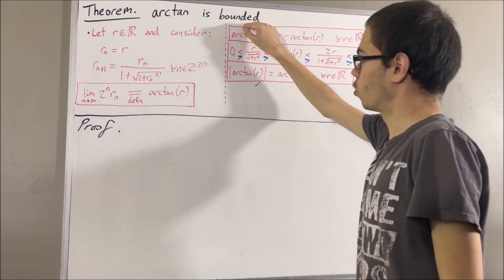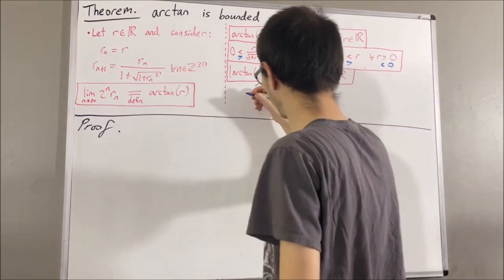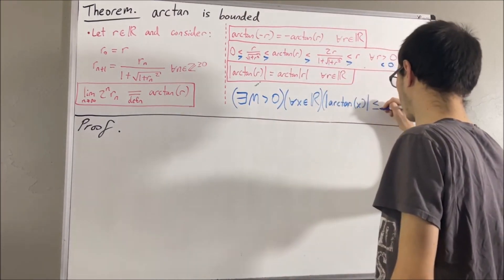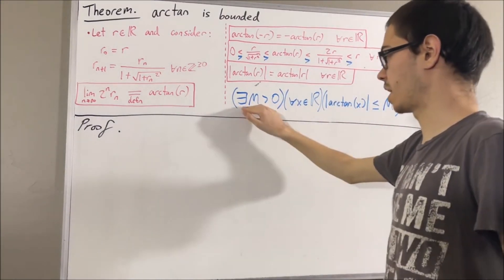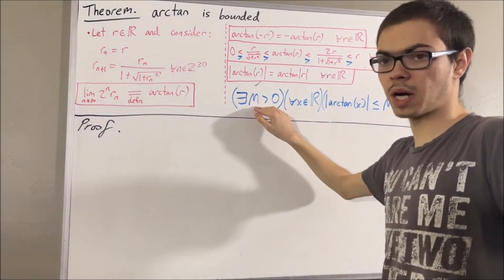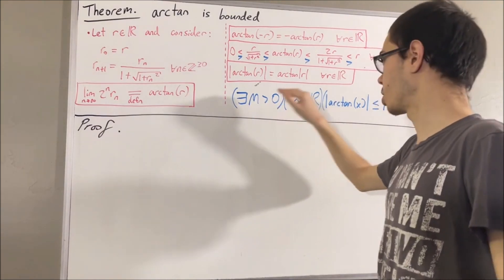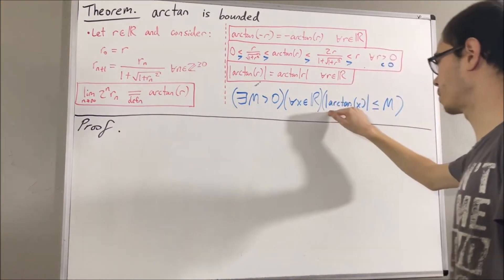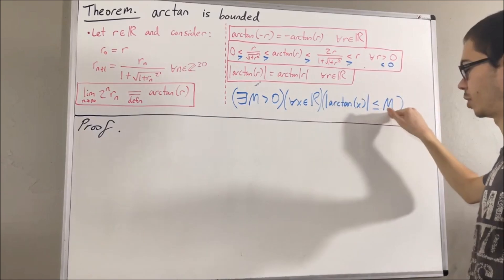Well, one way of putting it is as follows. It means that there exists a positive constant capital M such that for all x in the real numbers, the absolute value of arctangent of x is less than or equal to capital M.